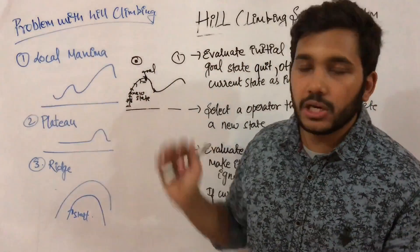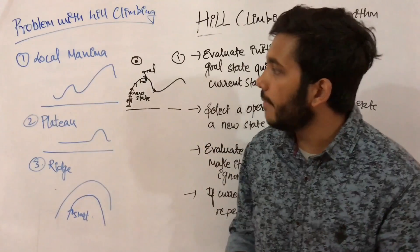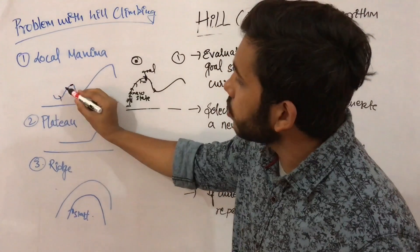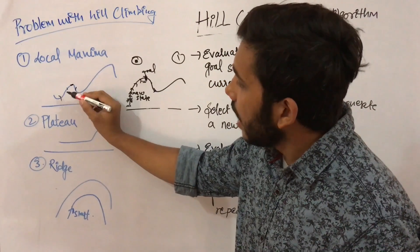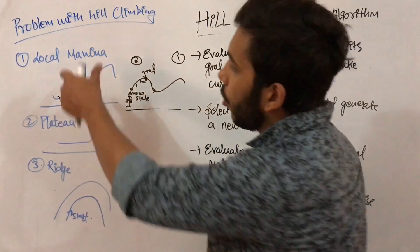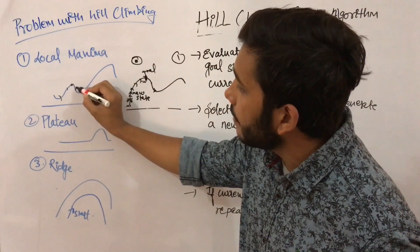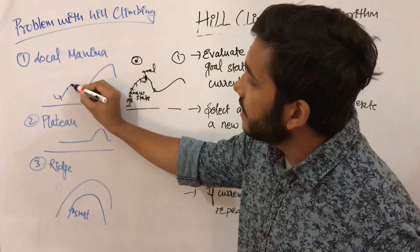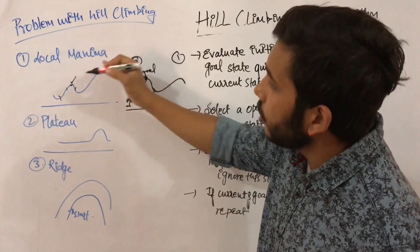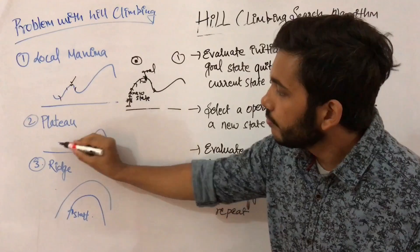Hill climbing has three major problems. The first is local maxima. Suppose you started from this point and you find this as the maximum value because all the neighbors nearer to it are at lower values — so you say this is the maximum point and you will not move forward. You find this as the highest point but you will not search the space for another, potentially higher maximum value.